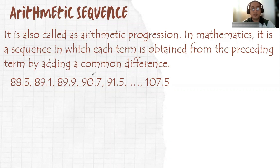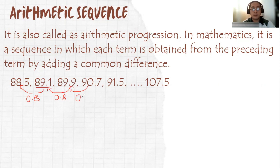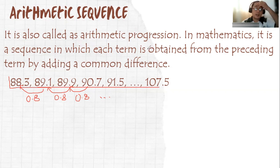How can we identify it? All you need to do is subtract the second term from the first term — that results to 0.8. The third term minus the second term also results to 0.8. The fourth term minus the third term also results to 0.8, and so on. Since the differences are all common — 0.8 — we can say that this sequence or number pattern is an arithmetic sequence.